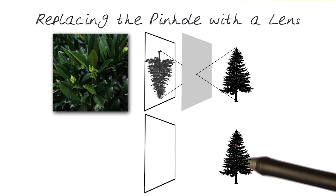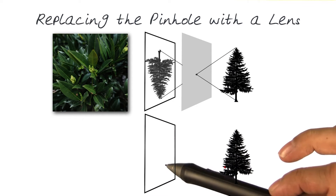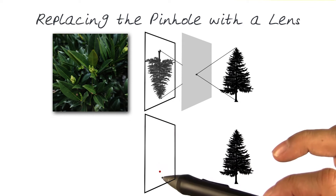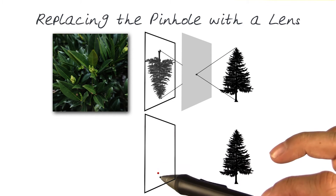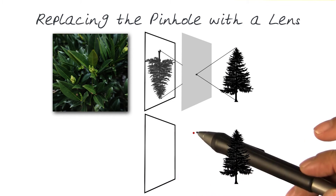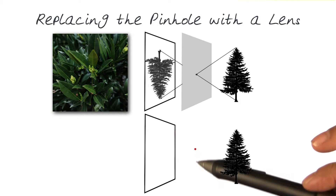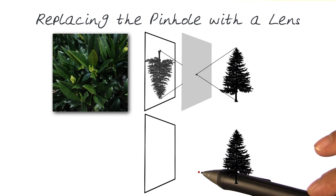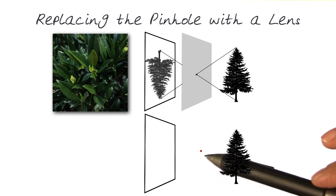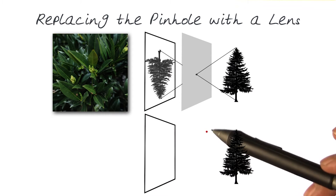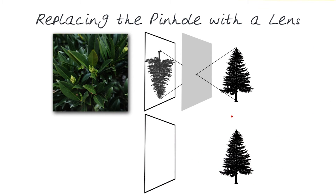So here we still have our tree, our sensor, our screen. And in place of the pinhole, we want to replace it with a lens. But before we do that, let's look at the characteristics of a lens.